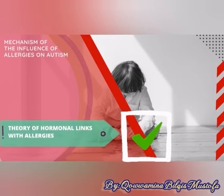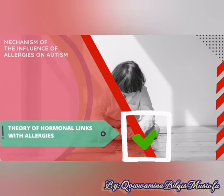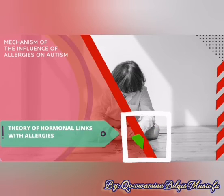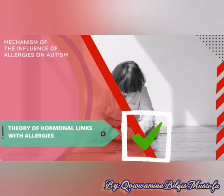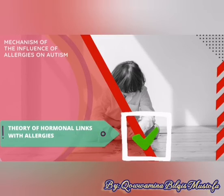In older children who are already menstruating, an increase in the hormone progesterone can cause premenstrual syndrome disorders. Symptoms of premenstrual syndrome include headaches, migraines, abdominal pain, nausea, vomiting, irregular menstruation, and excessive menstrual bleeding.